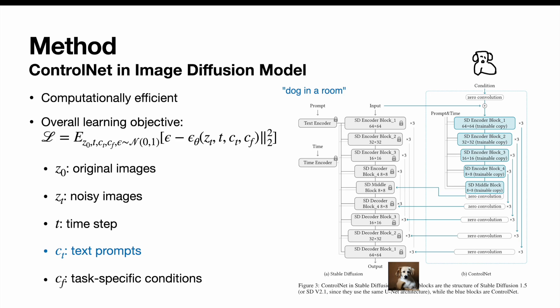Given a set of conditions, including time step, text prompts, as well as task-specific conditions, image diffusion algorithms learn a network to predict the noise added to the noisy images. The overall learning objective of the entire diffusion model can be written like this, and it can be directly used in fine-tuning diffusion models.